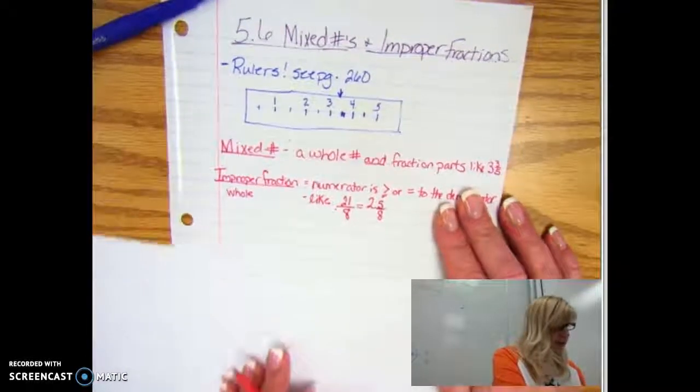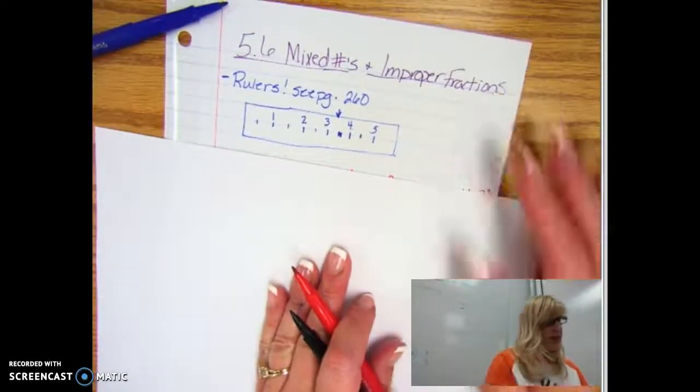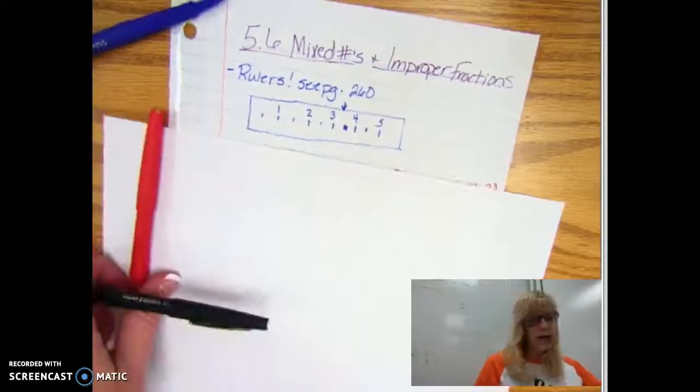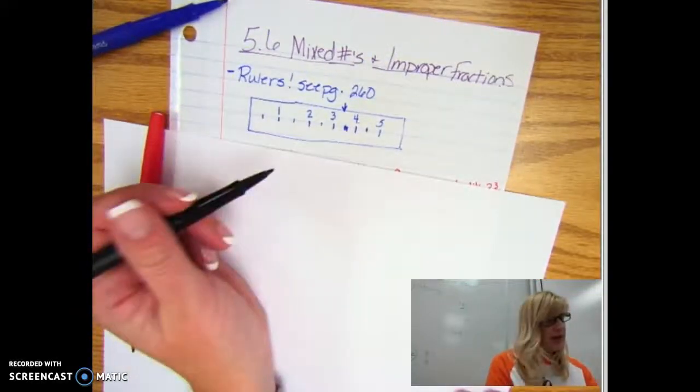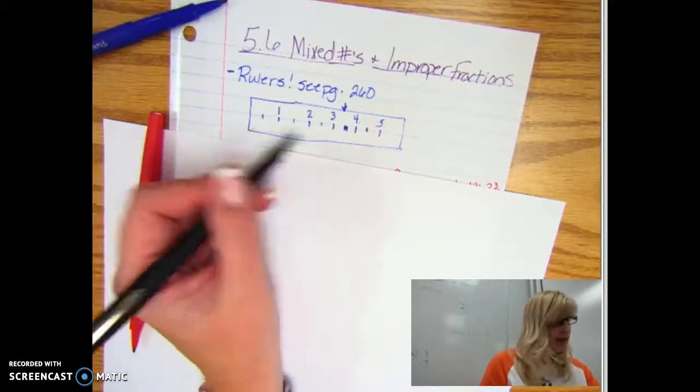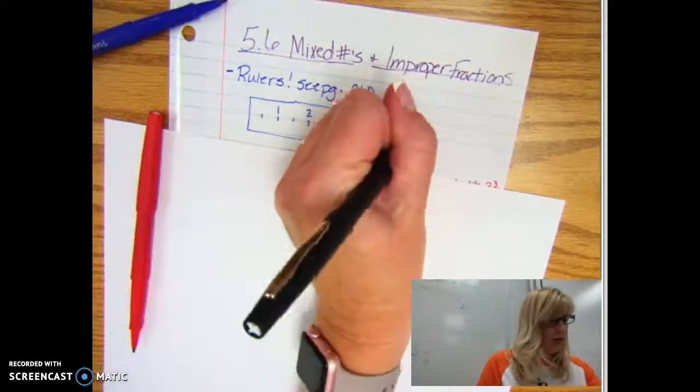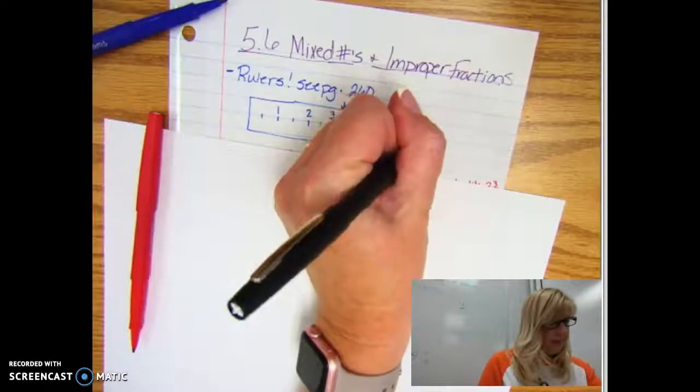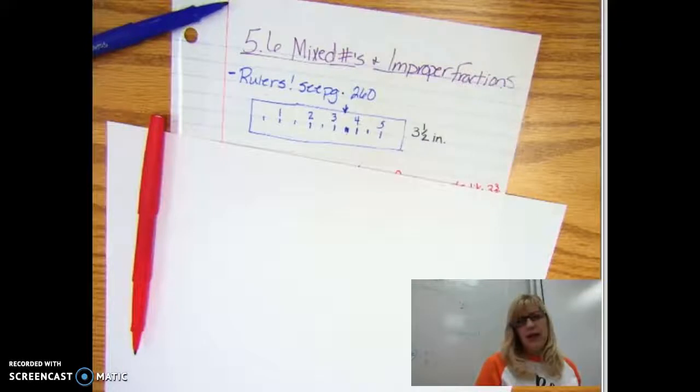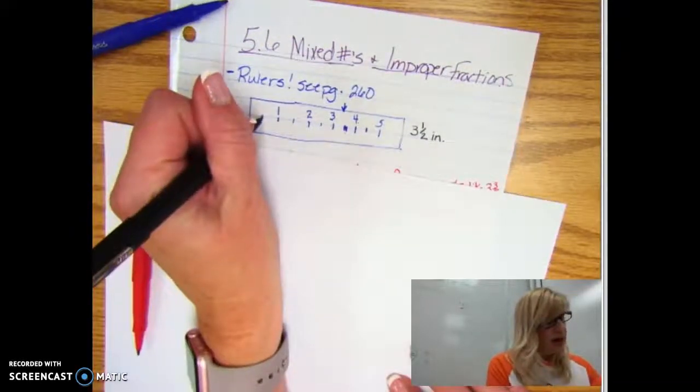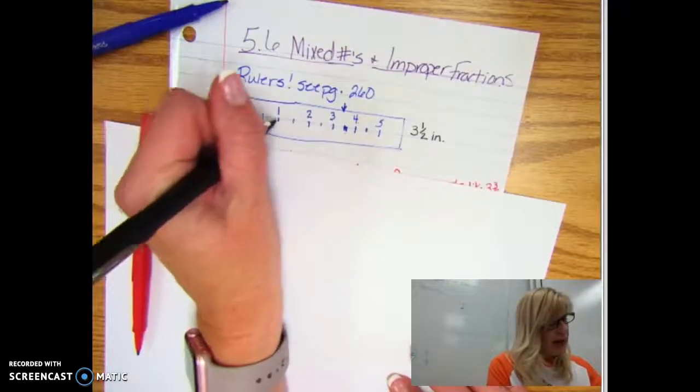The first thing we are going to talk about is looking at a picture of it and seeing how this works. So I measured something, maybe I measured a sour gummy worm, and it was three and one half inches. I want to count those in how many halves total those are.